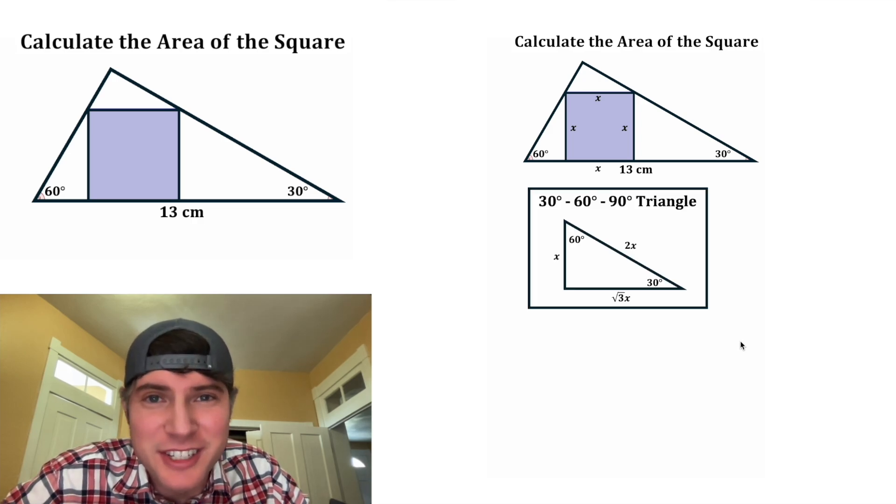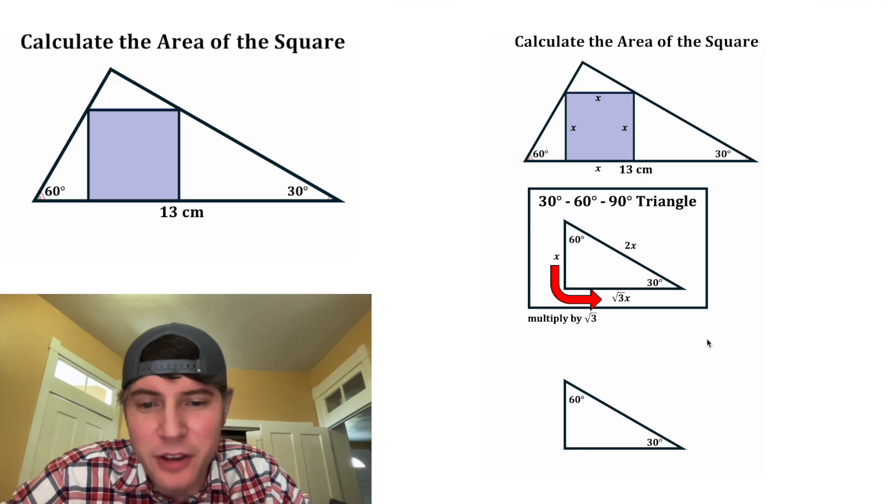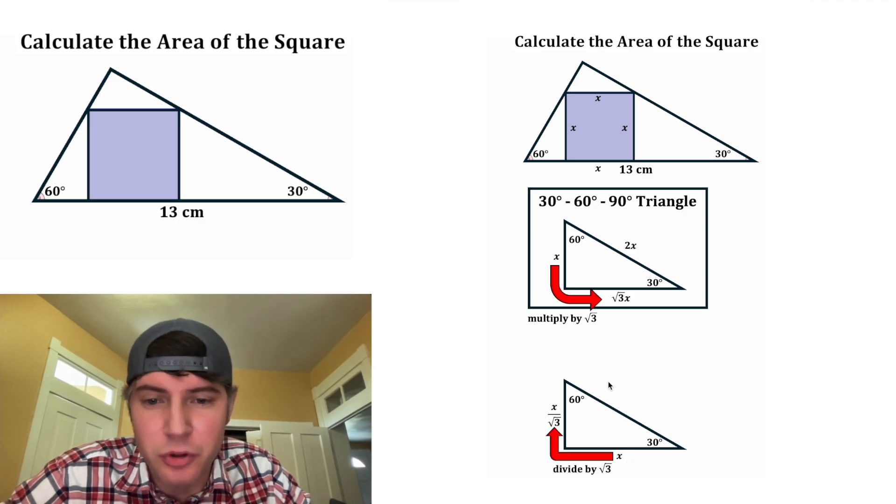Let's look at the notes for a 30-60-90 triangle. Every 30-60-90 triangle has this property: if you take the shorter leg and multiply it by square root of three, you'll get the length of the longer leg. And it works backwards as well. If you have the longer leg and you divide by square root of three, you'll have the shorter leg. So if the longer leg is X, the shorter leg would be X divided by square root of three.